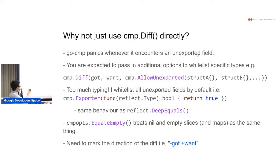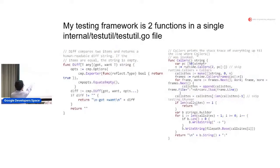So too much typing. I default to where I use this cmp.Exporter, it takes in a function, and then it checks whether the type allows unexported, and I always return true. So everything is - this is basically the same behavior as reflect.DeepEquals. It just compares everything unexported. If you need to change it, of course you can change it.